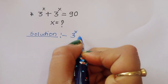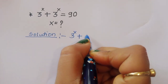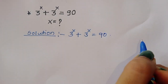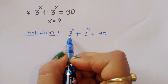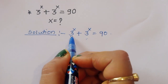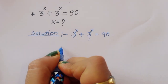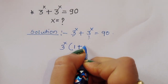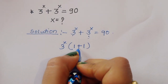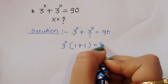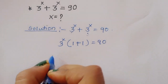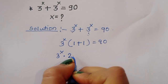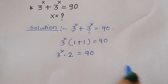First, what is given: 3 power x plus 3 power x is equal to 90. You can see here 3 power x, 3 power x — so we can take 3 power x as a common factor. So 3 power x times 1 plus 1. Right? 3 power x plus 3 power x is equal to 90.